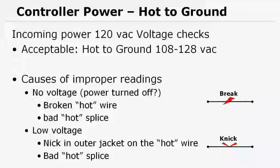So looking at that a little bit more, that 120 volt reading that we had, again, acceptable as 108 to 128, perfectly good reading at 120 volts. If we don't have that reading, some of the causes of an improper reading: if we get no voltage, let's go look and see if the power is turned off, or it could be that we have a broken hot wire, or we have a bad hot wire splice. If we have a low voltage reading, something below 108 volts, it may be that the hot wire has a nick in the outer jacket, or we have a bad hot splice somewhere in the power wire.